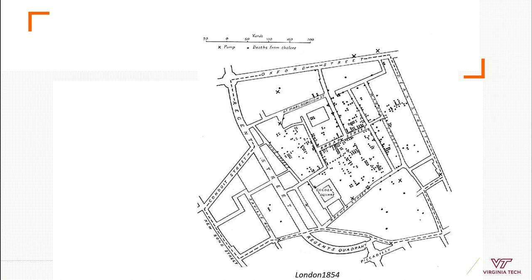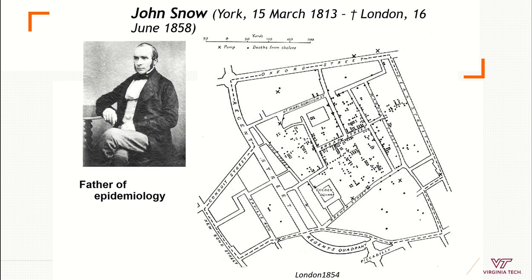If you are familiar with epidemiology, maybe you are familiar with this map. This is a classic map from the history of epidemiology, which was made by John Snow, who we consider the father of epidemiology. He was mapping cases of cholera in London, and here in the map we see that every point is a case. Using this map, he was able to identify a cluster of cases around a water pump, and after the removal of that pump, the epidemic was controlled.